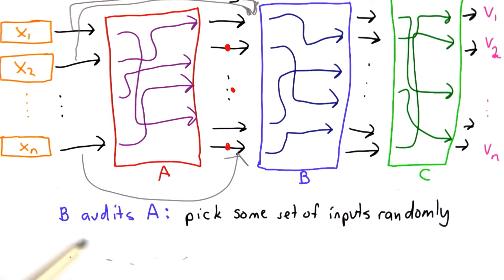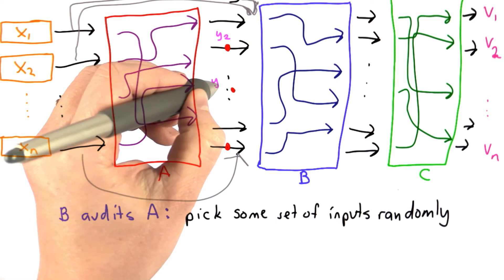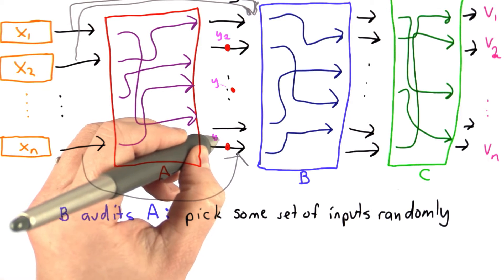So that means it's looking at some of A's outputs, and we'll call these y values. So this would be y2, this would be y something else, and this would be y of n minus 1.